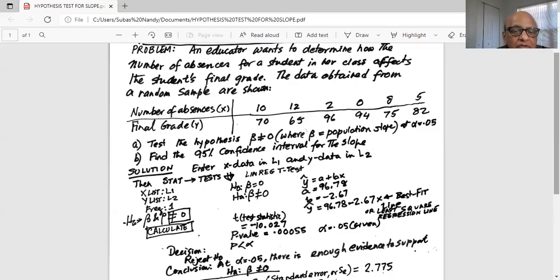So your null hypothesis is beta equal to 0 and the alternate beta not equal to 0. And then you go down to calculate and hit enter.